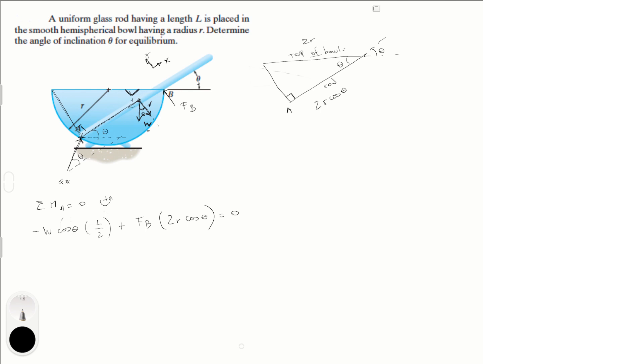And this is equal to 0. F of B is equal to the weight times the length times the cosine of theta all over 2 times 2R cosine of theta. Cosines of theta cancelled out. And we get that F of B is equal to the weight times the length over 4R. And we're going to call this equation 1.